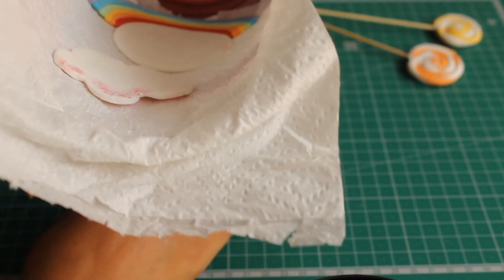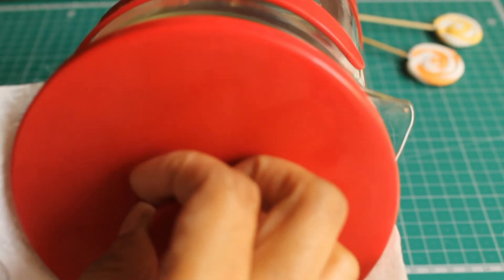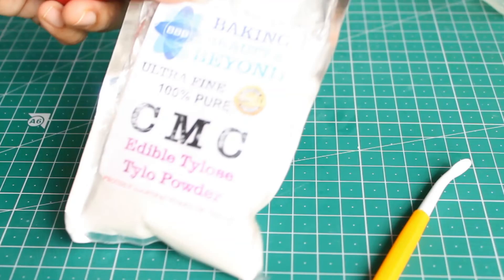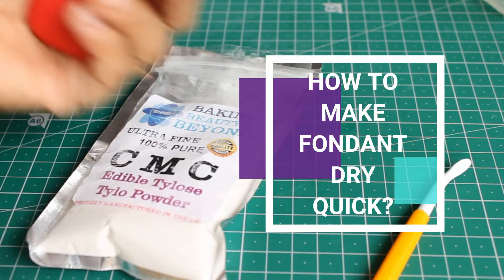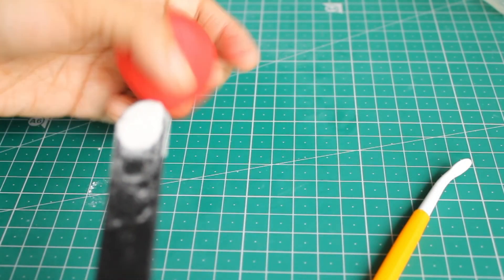After it dries completely, keep it in a container. What do you do if you do not have time to let it dry? You use CMC powder, also commonly called Tylose powder, which lets it dry quicker.